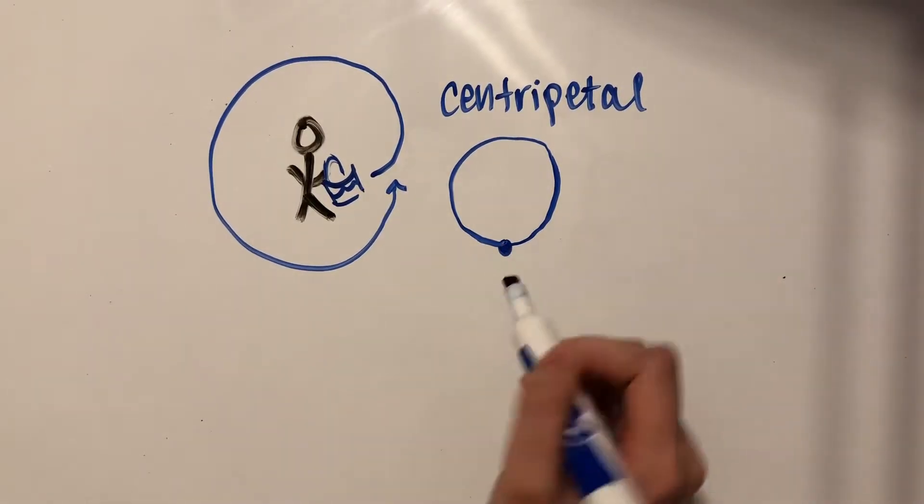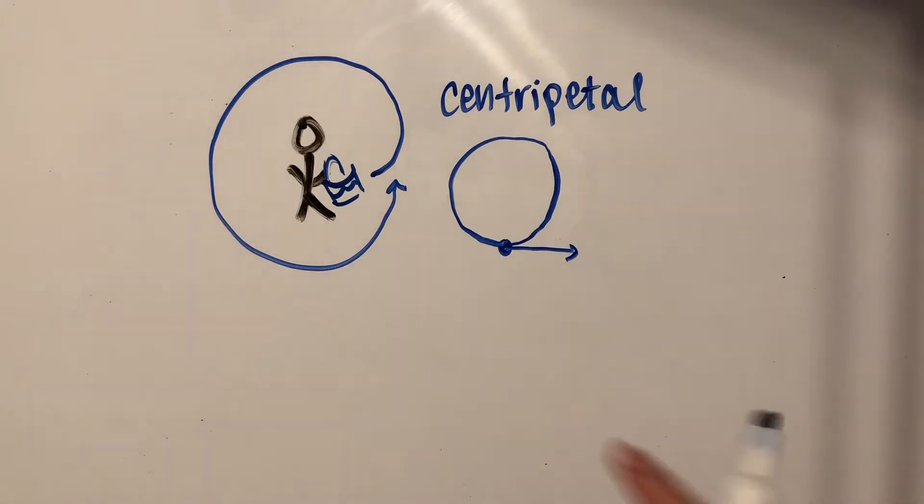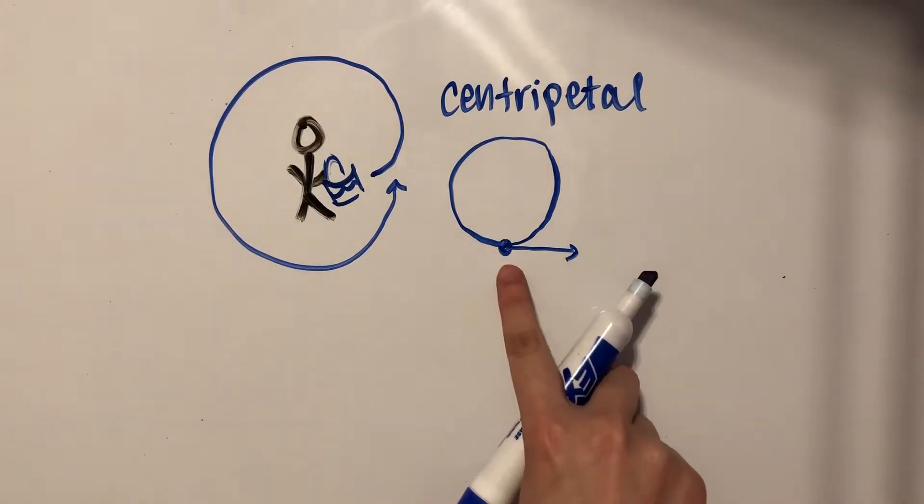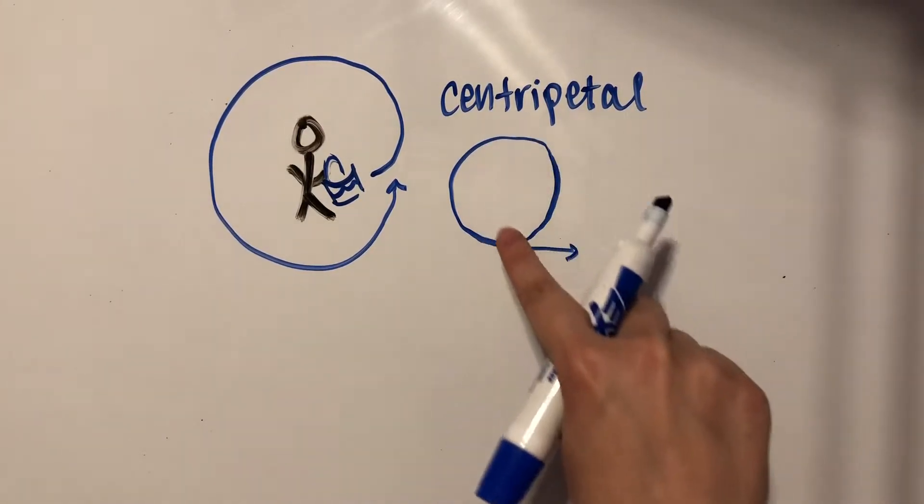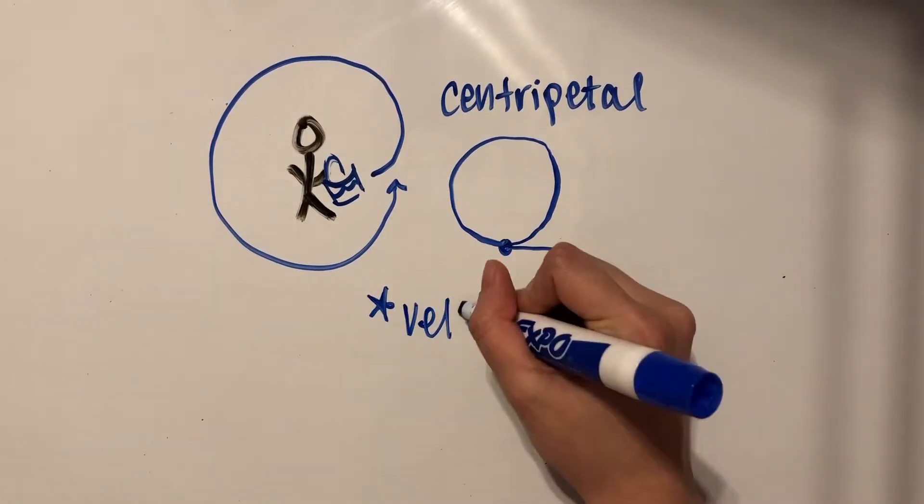Since it's at the bottom here, its velocity would be something like this. As you can see, its velocity is going to be tangent to the circular path that it's taking. So velocity is going to be tangent to the circle.